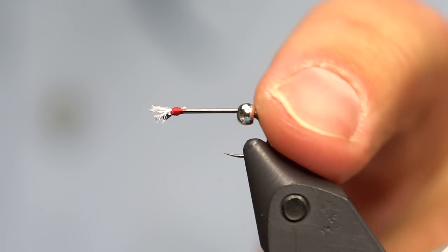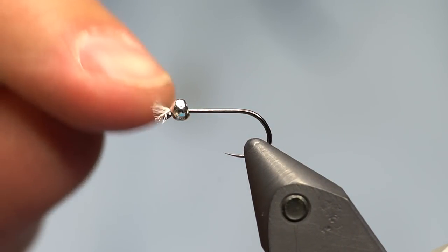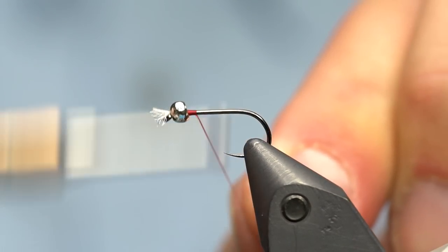We've got the gills on there. Now I'm going to get the bead and push it back over the top of the thread, and then I'm going to start the thread right behind the bead just like you normally would.